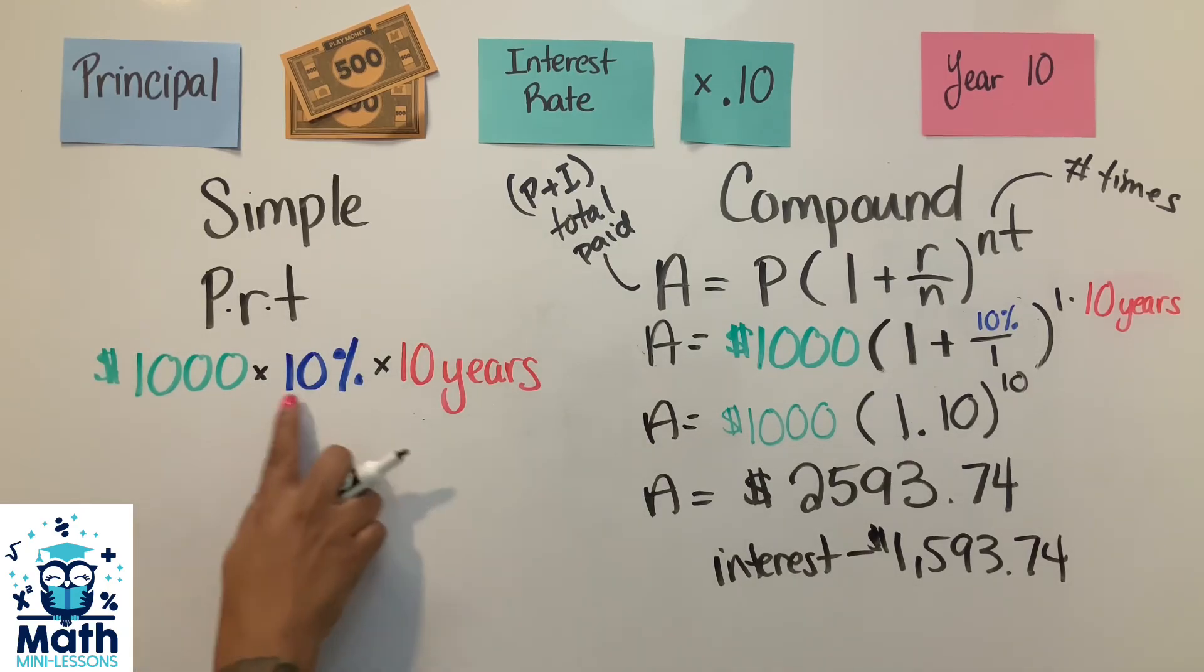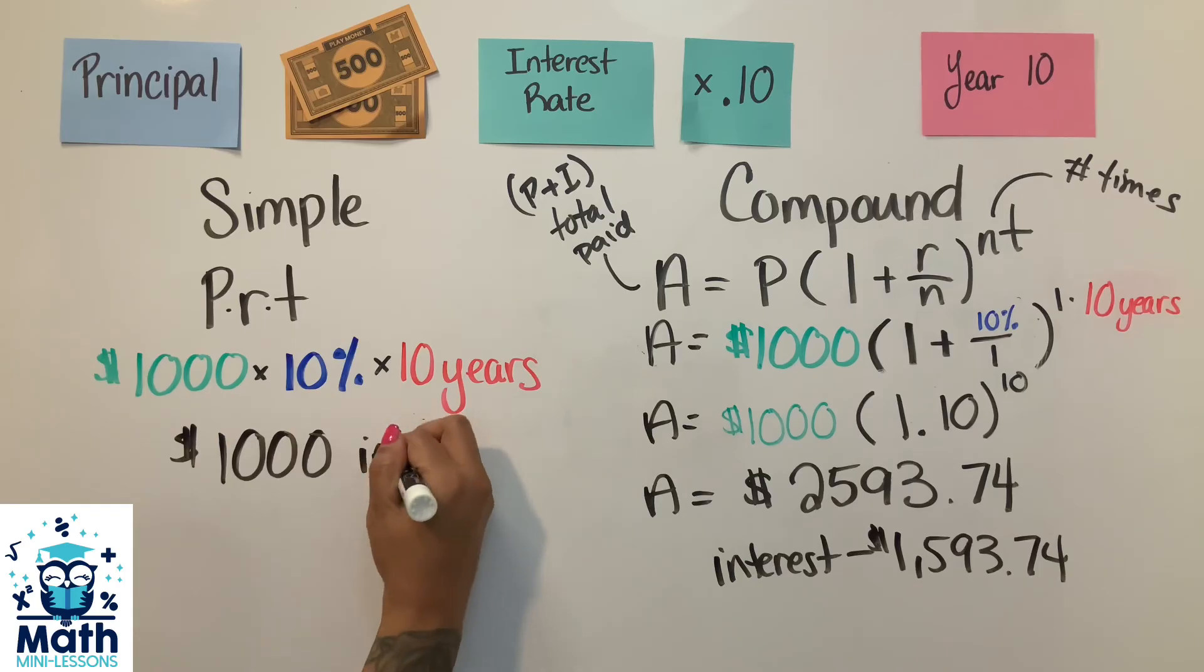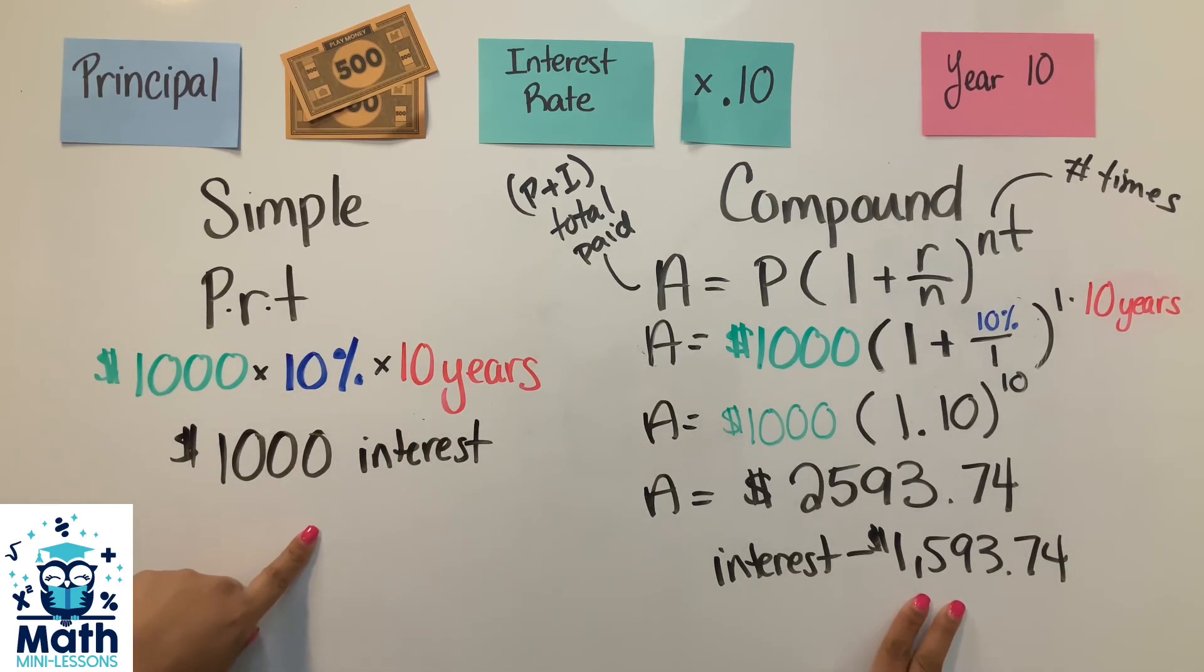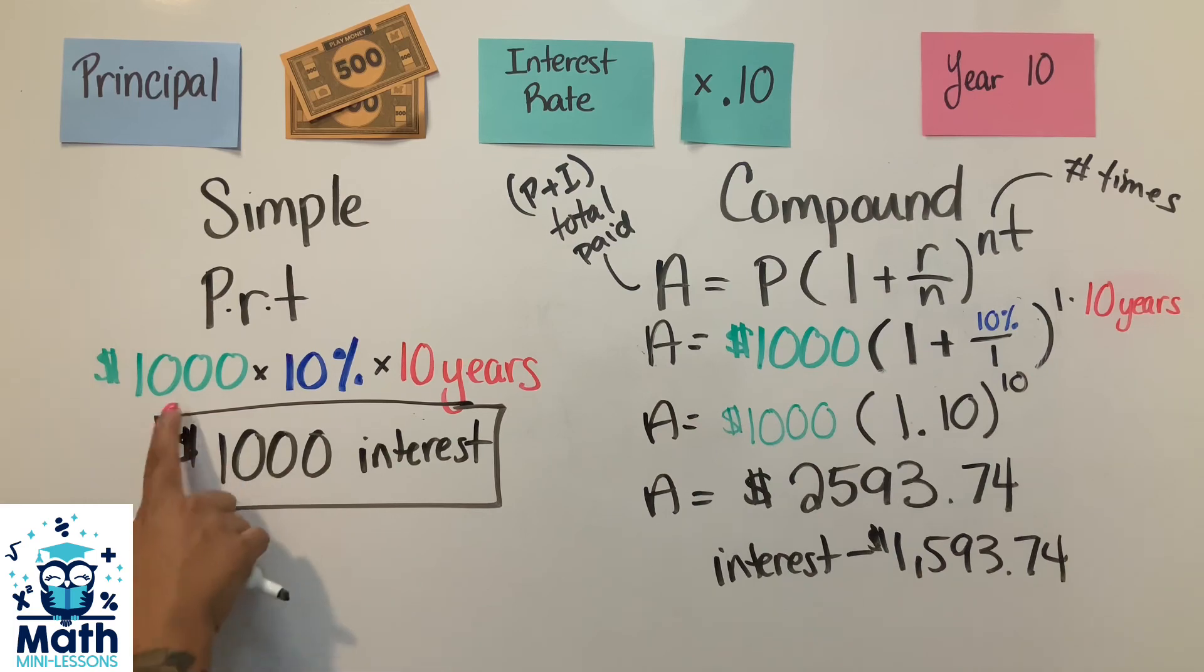With simple, if you just multiply these three numbers - remember, turn this percent into a decimal - it's just going to be $1,000 in interest. And let's compare these two numbers. Look at it: in simple interest, if you're just doing the rate times just the principal, it's a thousand. But look at how much - because you're charging interest on top of interest - so your interest is much higher with compound interest.